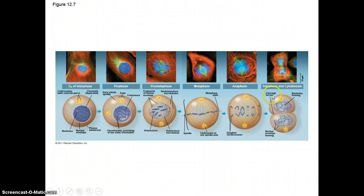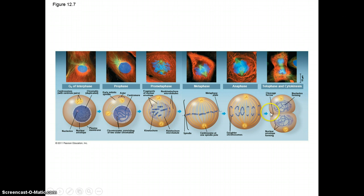During telophase, the nuclear envelope starts to reform. This is the last part of mitosis, but then the separate process of cytokinesis begins to overlap. In an animal cell like this one, a cleavage furrow begins to form, the cell begins to pinch in, and eventually will divide.